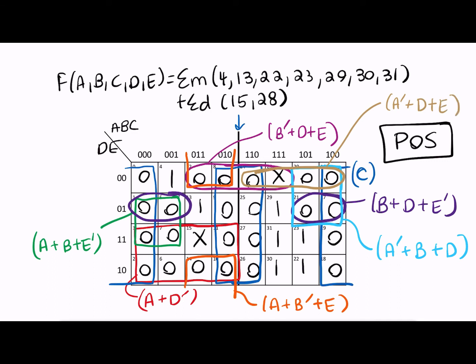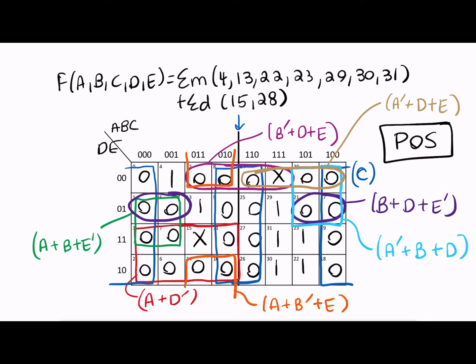So we have found all eight prime implicants. At this point, we're ready to make our prime implicant table to figure out which are our essential prime implicants and which terms we need to include in our final expression. Here's our prime implicant table for our expression. Remember that we don't include don't cares here because we don't care if the don't cares are included or not.